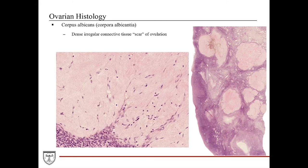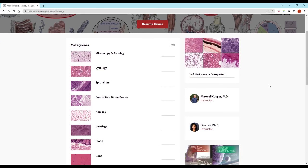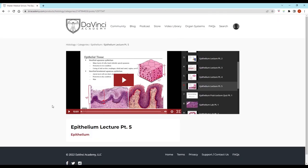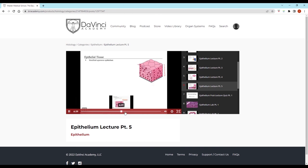Histologically, the corpus albicans looks like dense irregular connective tissue with lots of collagen type 1 fibers and flattened fibrocytes wedged in between. Albicans refers to the color white, attributable to the grayish-whitish collagen fibers observable with naked eyes. With increasing age, more and more corpora lutea form and degenerate, so the number of corpora albicantia will accumulate and increase in number with age. Thank you for watching this video from the DaVinci Academy Histology Video Course, which is completely available on YouTube. To access the corresponding practice questions and histology lab videos, go to our website using the link in the description below.